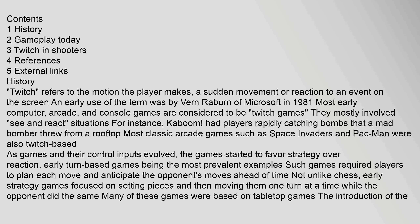History refers to the motion the player makes — a sudden movement or reaction to an event on the screen. An early use of the term was by Vern Raburn of Microsoft in 1981. Most early computer, arcade, and console games are considered to be Twitch games. They mostly involved see-and-react situations. For instance, Kaboom! had players rapidly catching bombs that a mad bomber threw from a rooftop.